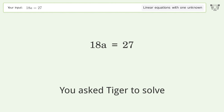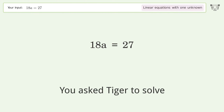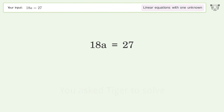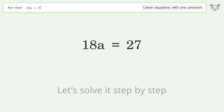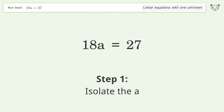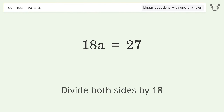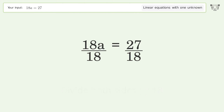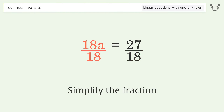We asked Tiger to solve a linear equation with one unknown. The final result is a equals three over two. Let's solve it step by step: isolate the a, divide both sides by 18, and simplify the fraction.